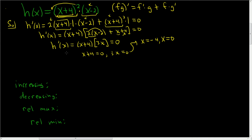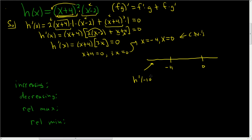The derivative is never undefined, so these are our only critical numbers. Now I like to draw a number line and plot the critical numbers, then pick test points in each interval. Let's try negative 10: h prime of −10 gives (−10 + 4) = −6, and 3(−10) = −30, so −6 times −30 = 180, which is positive. So the function is increasing over that region — I'll draw an arrow going up.